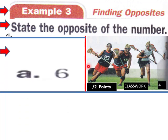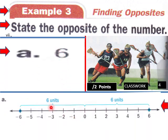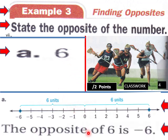Let's go into page 4. Example number 3: finding opposites. State the opposite of a number. What's the opposite of 6? Here's positive 6, and negative 6 is still 6 units from the origin. So the opposite of 6 would be negative 6.